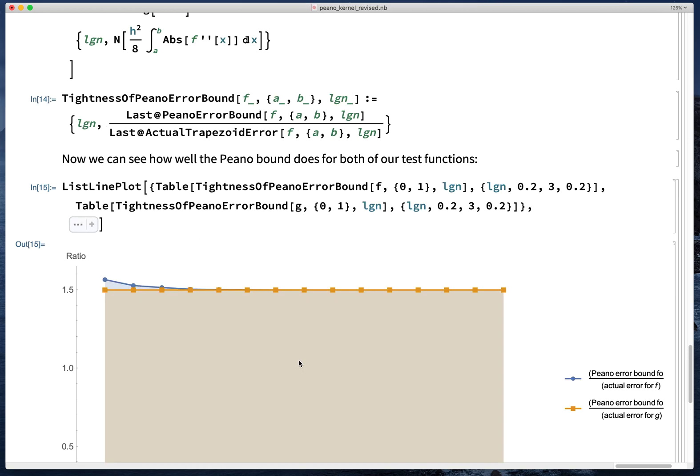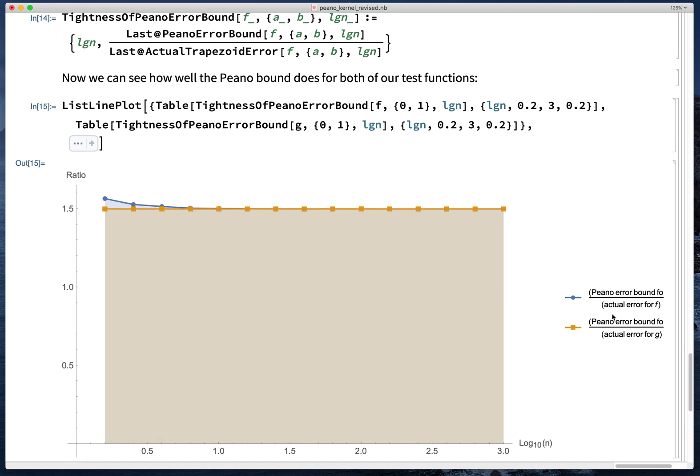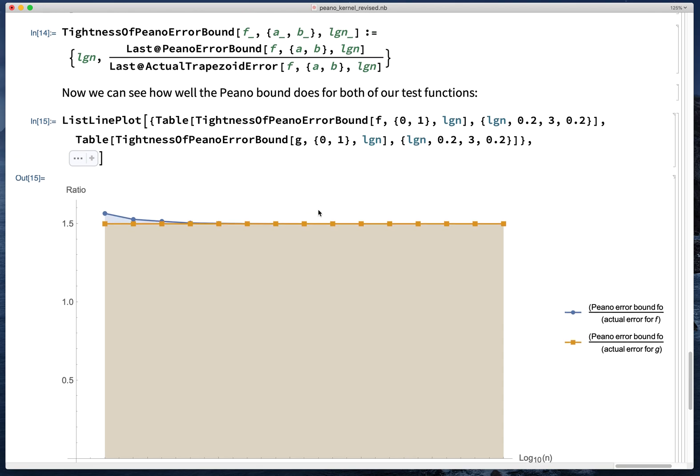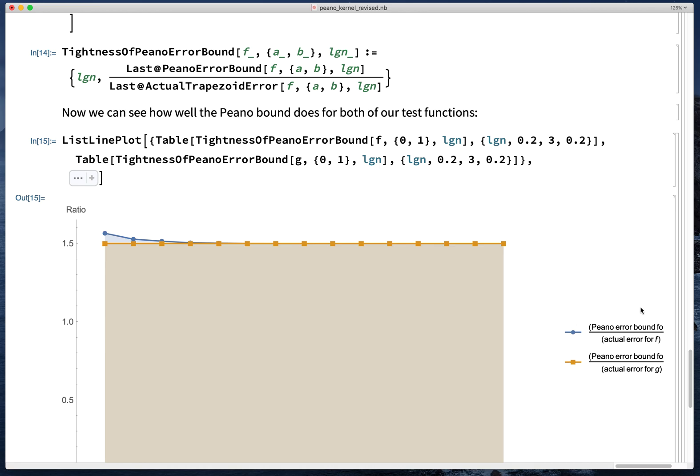So we'll just give this a moment to compute. All right. So if we compute it, we see that for both our functions f and g, the Peano error bound is about 1.5 times the actual error. This is considerably better than the standard error bound for the function f with a variable second derivative.